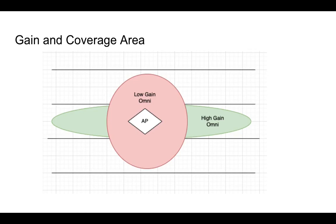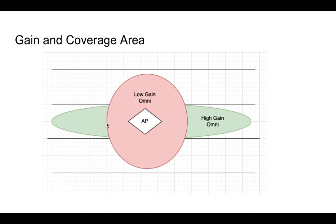Looking at a diagram with floors 1, 2, and 3 — if an access point on floor 2 has a high-gain omni antenna, you'll have great coverage on floor 2 but minimal coverage on floors 1 and 3. If the antenna is a low-gain omni, you'll have better coverage between floors but poorer coverage on the same floor.